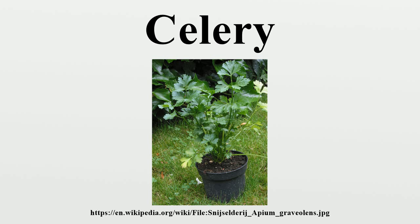The plants are raised from seed, sown either in a hotbed or in the open garden according to the season of the year, and after one or two thinnings and transplantings, they are, on attaining a height of 15 to 20 cm, planted out in deep trenches for convenience of blanching, which is affected by earthing up to exclude light from the stems.